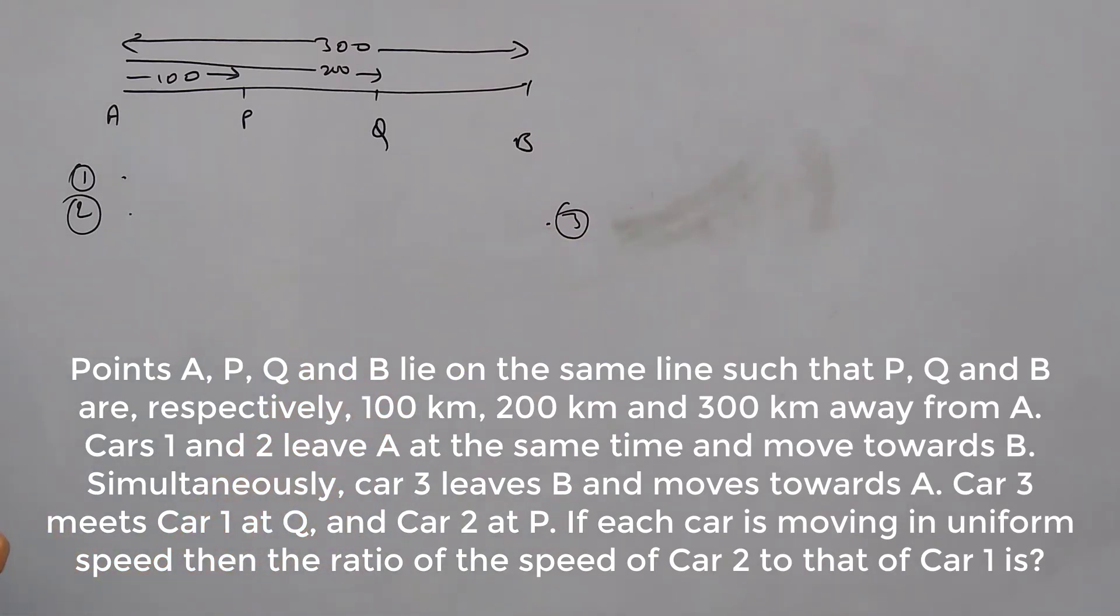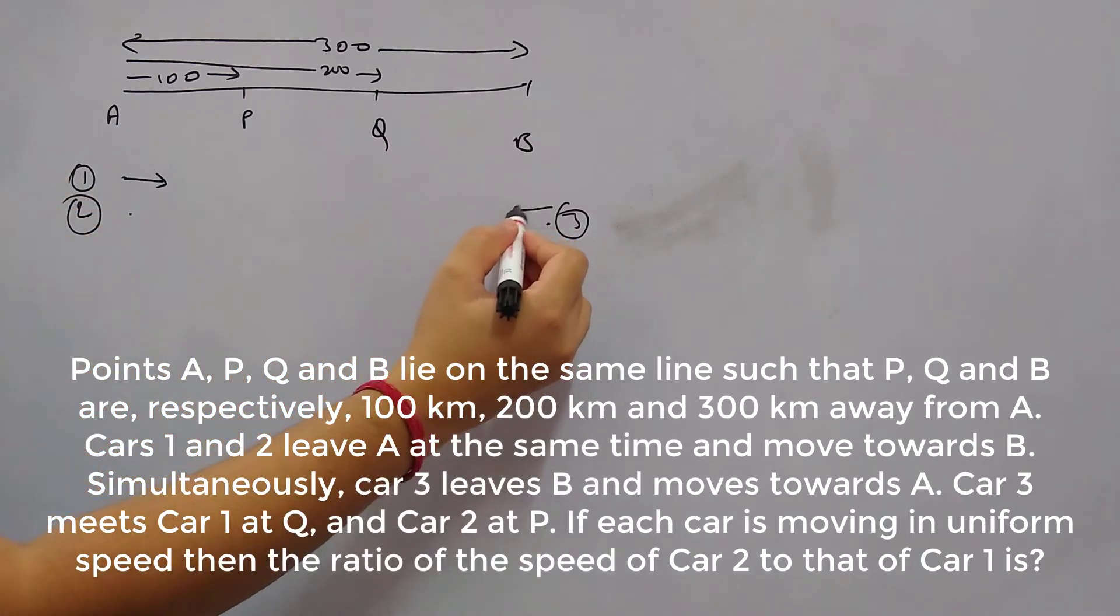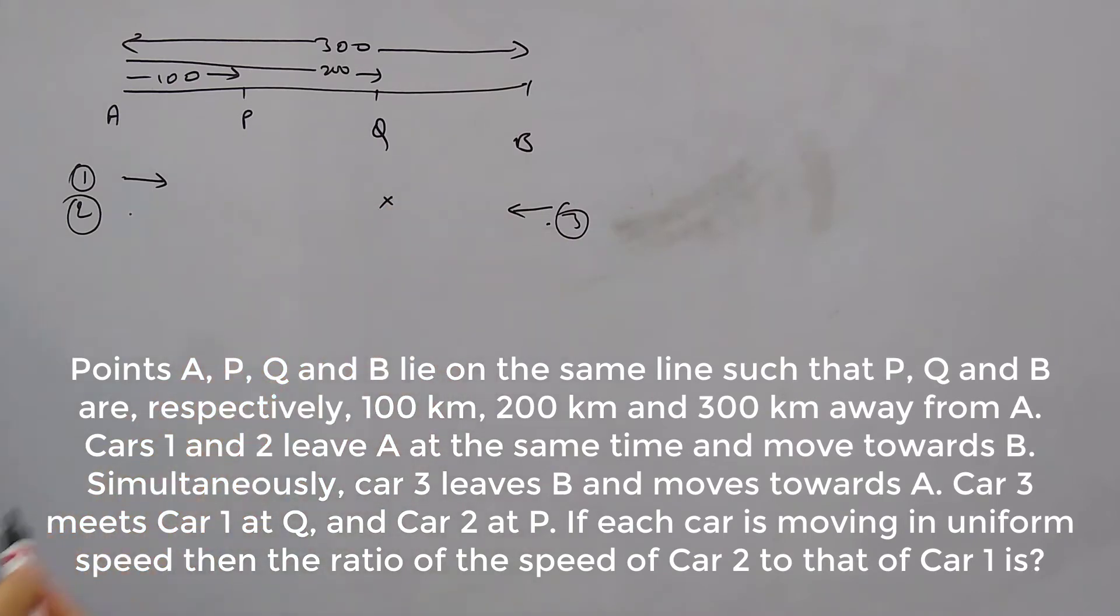Car 3 meets car 1 at Q. So car 1 has started towards B and car 3 towards A, they are meeting at Q. And car 3 meets car 2 at P. So car 3, after coming from B towards A, is meeting car 2 at P. At these two points these three cars are meeting.